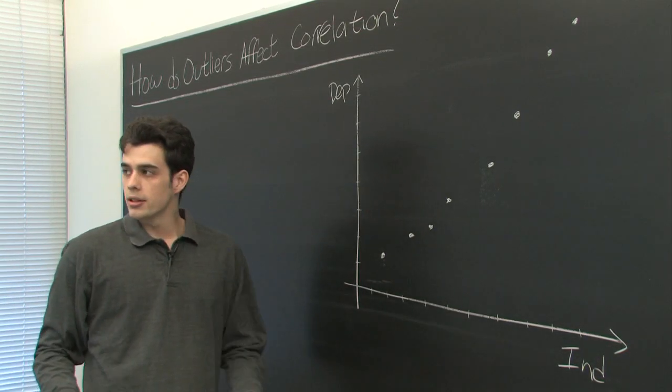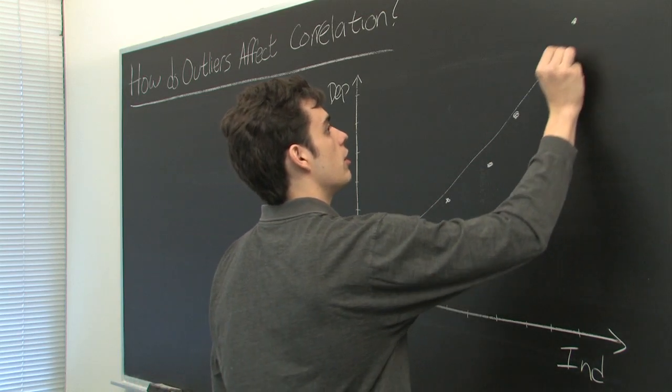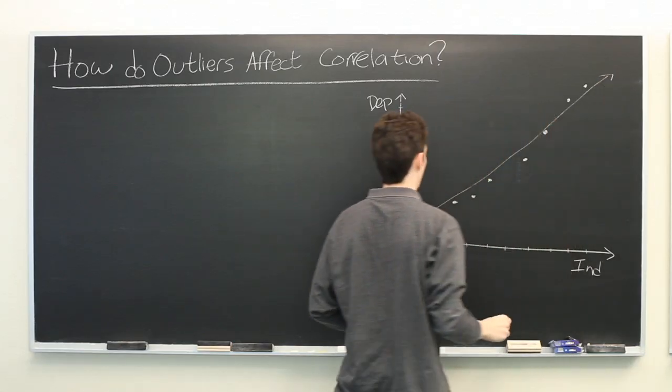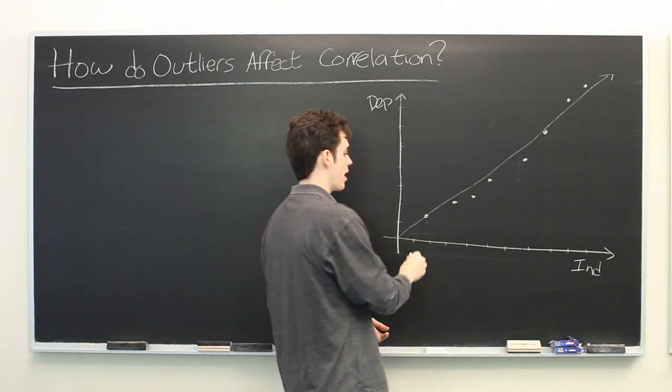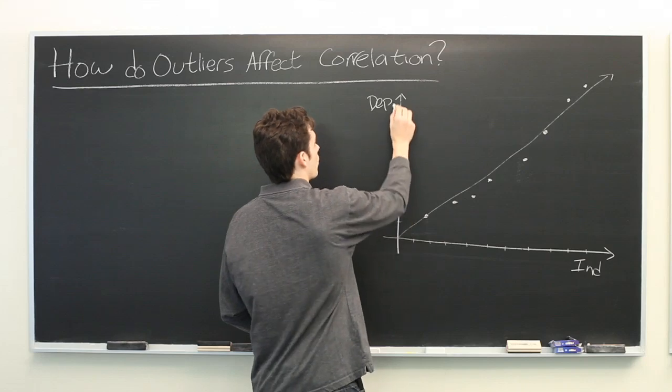Now right off the bat we can see that this will probably have some sort of linear correlation between the two variables. As this variable increases this quantity will increase as well.